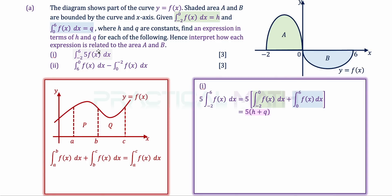In A part 1, by the scalar multiplication rule of integration, we can take out the constant 5. The integral from -2 to 6 of f(x) dx can be split into the integral from -2 to 0 plus the integral from 0 to 6 of f(x) dx. The green part is h and the blue part is q, giving us the answer 5(h + q).